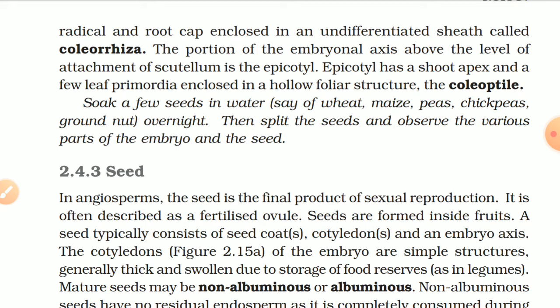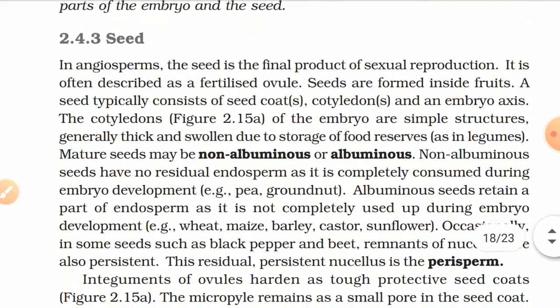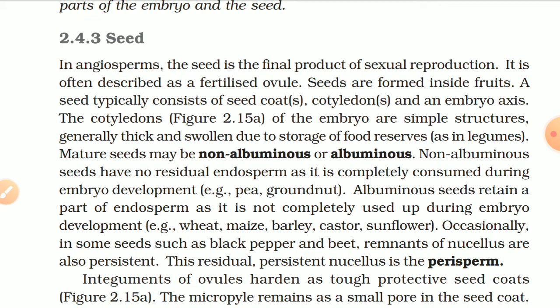In angiosperms, the seed is the final product of sexual reproduction, often described as a fertilized ovule. Seeds are formed inside fruits. A seed typically consists of seed coats, cotyledons, and the embryonal axis. The cotyledons of the embryo are generally thick and swollen due to storage of food reserves, as in legumes. Mature seeds may be non-albuminous — having no residual endosperm as it is completely consumed during embryo development (e.g., pea, groundnut) — or albuminous, retaining a part of endosperm (e.g., wheat, maize, barley, castor, and sunflower).